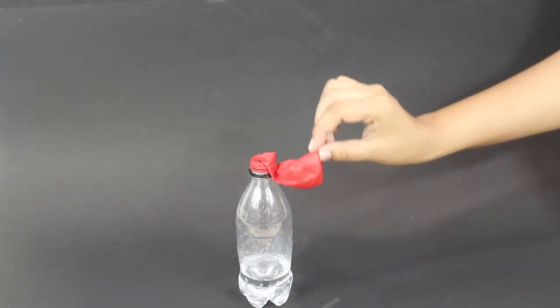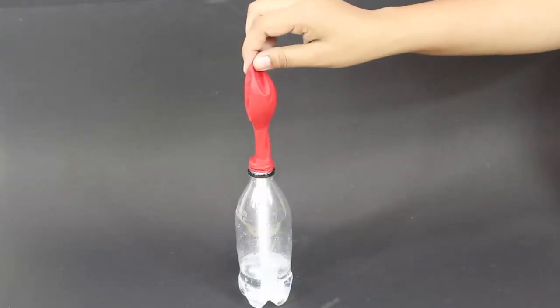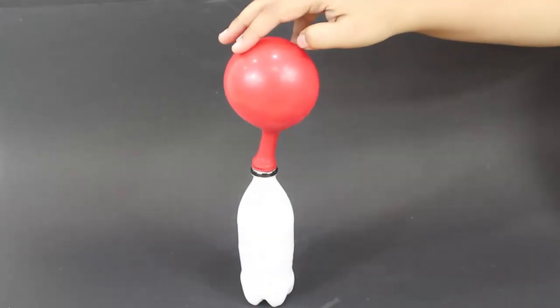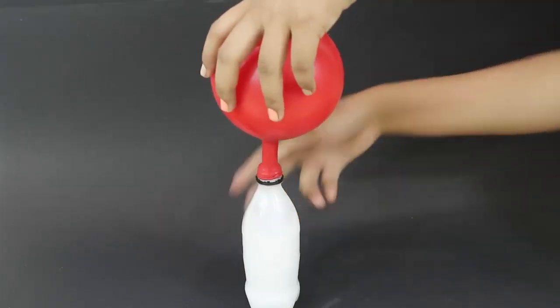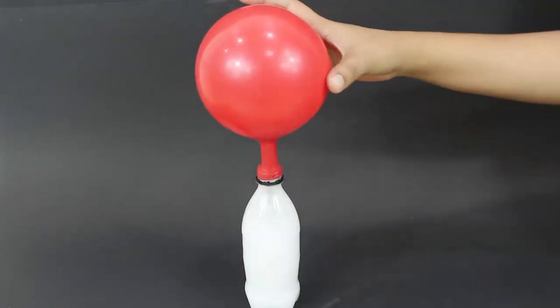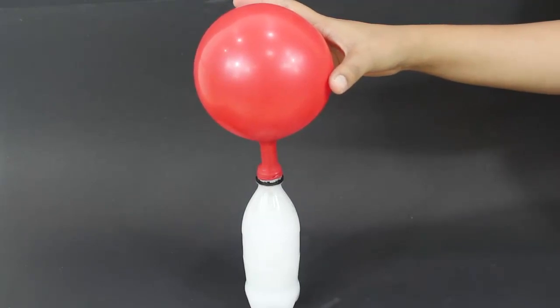Now slowly invert the balloon so that the baking soda and vinegar is mixed. You will notice a lot of effervescence on the top of the solution. The balloon is inflated with some gas.